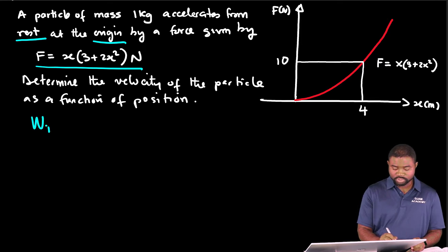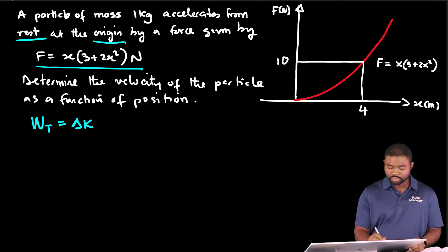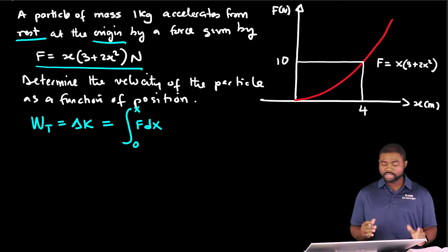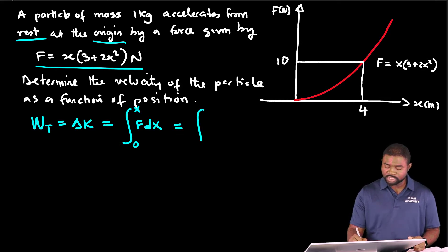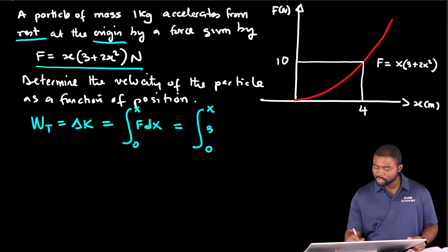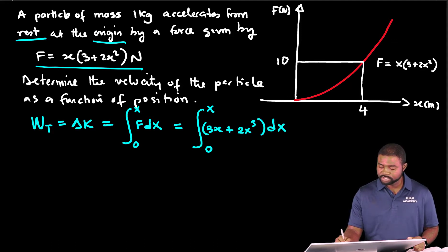So the total work done equals the change in kinetic energy of the particle, which equals the integral from 0 to x of F dx. Now the particle accelerates in the direction of the force, so cosine theta equals 1. This will be equal to the integral from 0 to x of (3x + 2x³) dx.